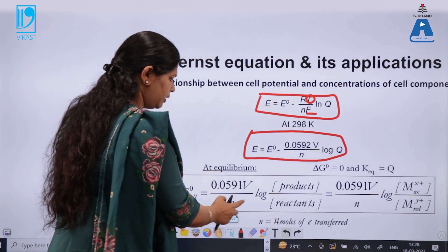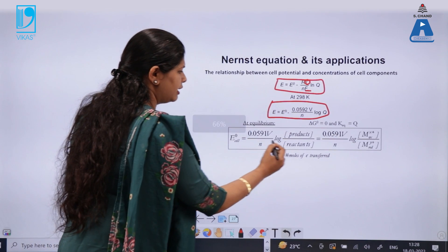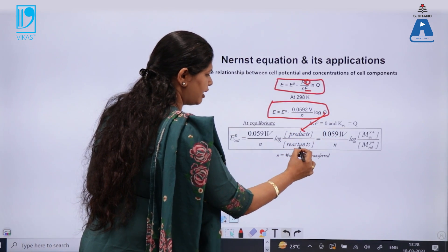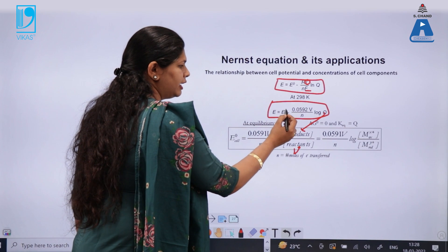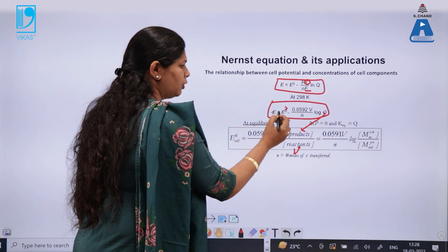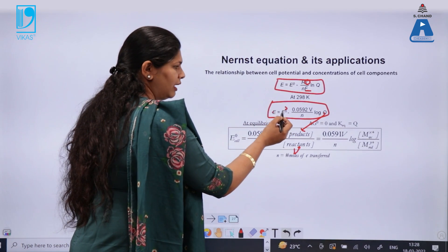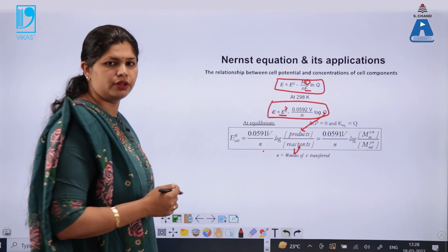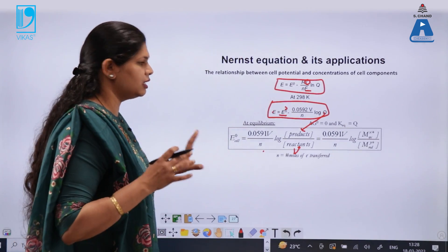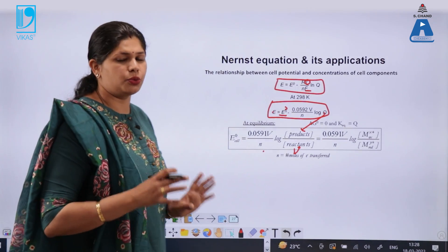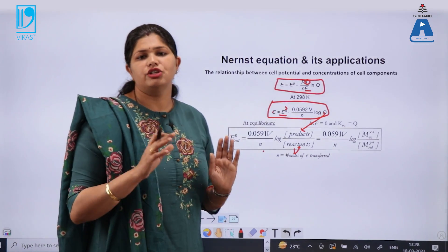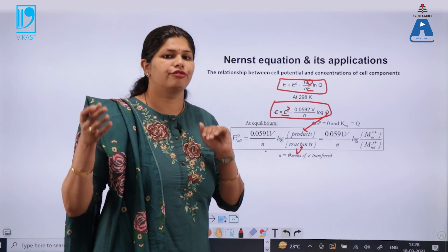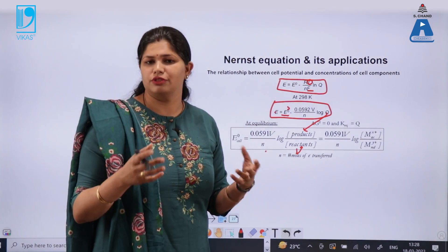At equilibrium, log of Q becomes log of K_eq, and the E cell value will be 0, so E_cell equals this expression. This is the Nernst equation, which is developed for different concentrations of reductants and oxidants.